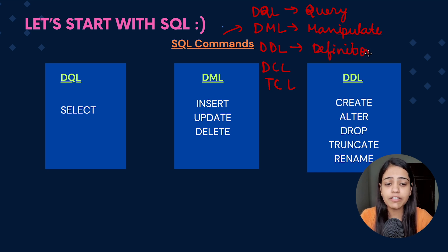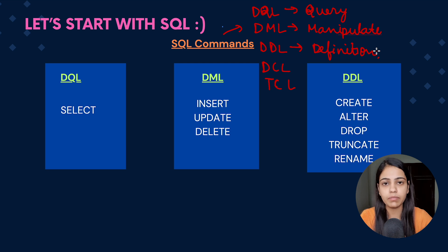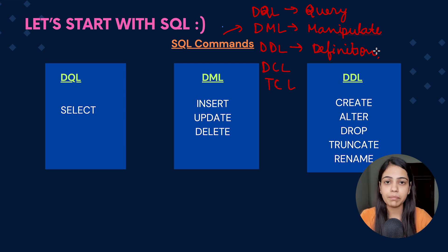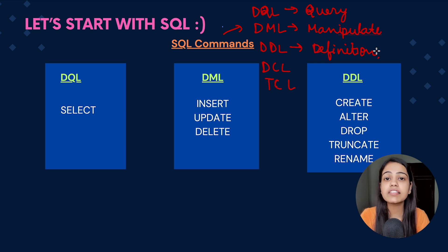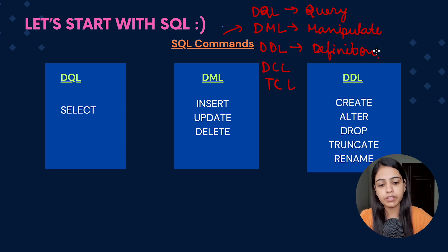The third command was the DDL command, that is Data Definition Language command. Data Definition Language command mostly deals with the definition or the schema of the data — basically like creating the table, creating the database, doing some modification in the database, doing some modification in the table. So whenever we are dealing with the schema or the definition of the table we use this DDL command.